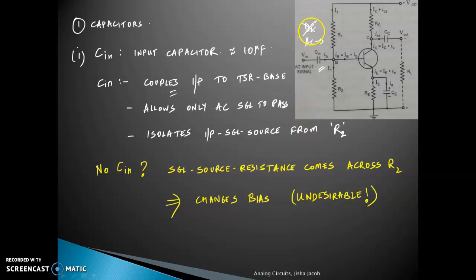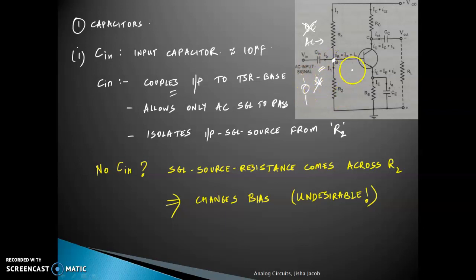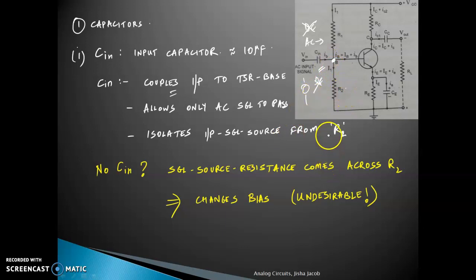When it blocks DC components, no DC will pass through. That means there is no DC connection between the input source and the base. Therefore, the input source is isolated from the base, or in other words, the input signal source is isolated from R2. That is also a purpose of the input capacitor.